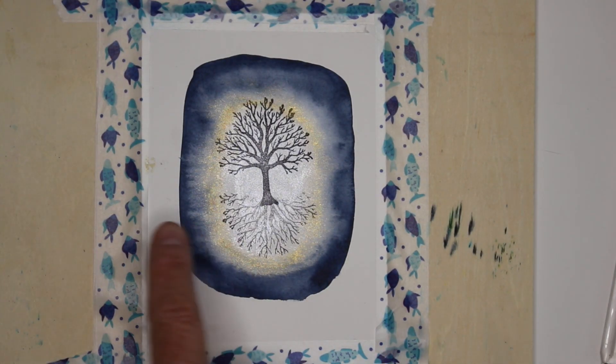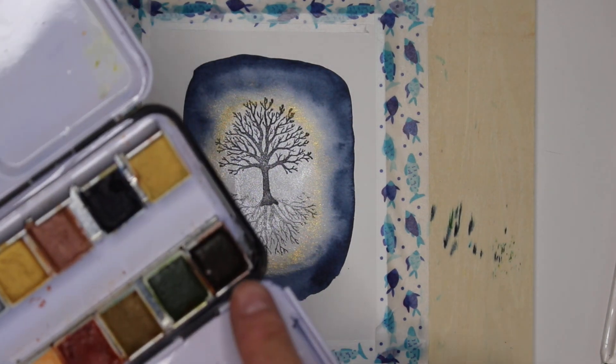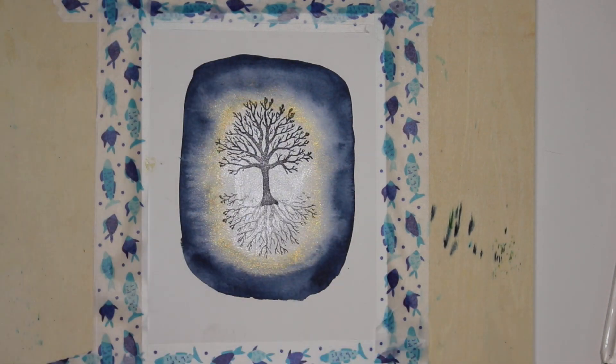Now what I'm going to do is add my horizon line. I'm actually going to add a different color for that. I like using this sepia brown tone and I mix it with a little bit of the blue. So I can just take this brown and this blue.